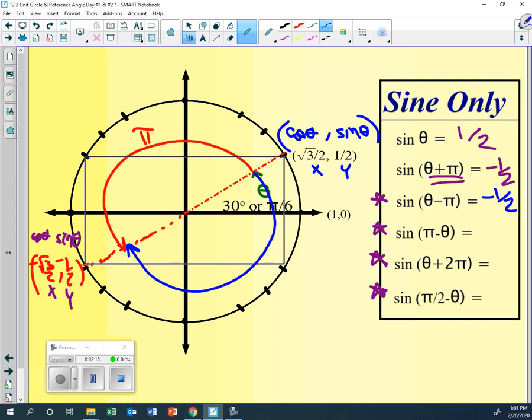How about for sine of pi minus theta? Now this one's a little different. For this one, I'm going to make this a little bold here. You're going to start at pi, and then you're going to go back theta. So you're going to go back theta, and is that still going to be on my rectangle? Uh-huh. So it's still the square root of 3 over 2, one half, and this is negative, this is positive. So what's the sine going to be? One half again.